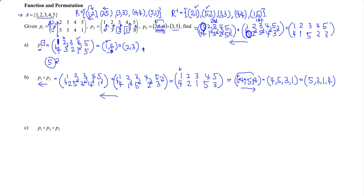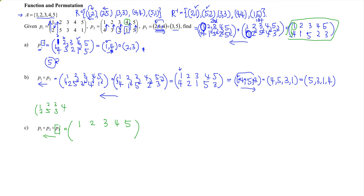For the last example, again read from behind to the one in front — right to left. We write 1, 2, 3, 4, and 5 arranged in ascending order. We read the first permutation, then copy down the permutations to solve step by step.